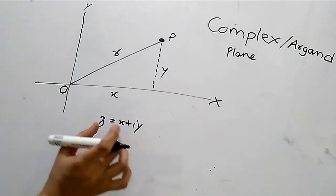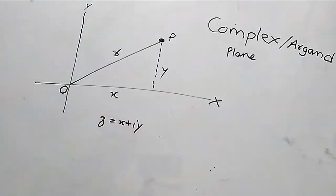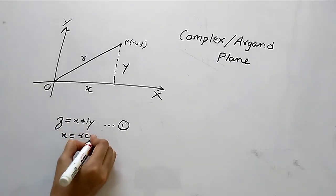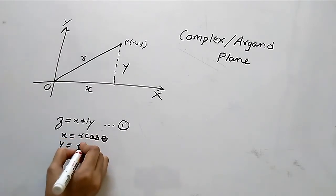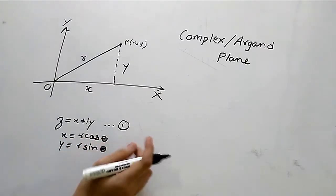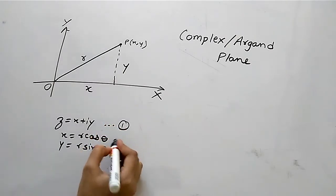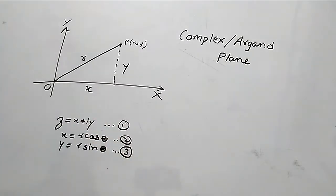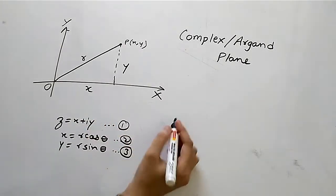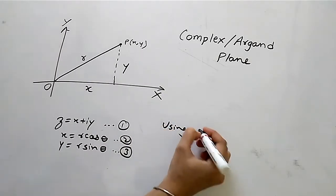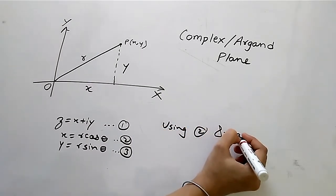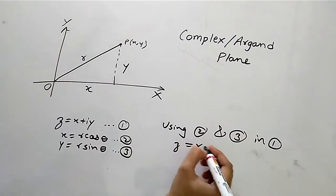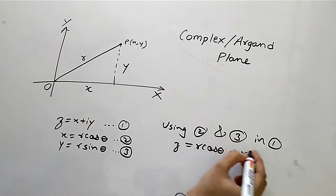So, the complex number Z has a general form. Now, X is equal to R cos theta, and Y is equal to R sin theta — call these equations 2 and 3. Using equations 2 and 3 in equation 1, we get Z is equal to R cos theta plus i R sin theta.